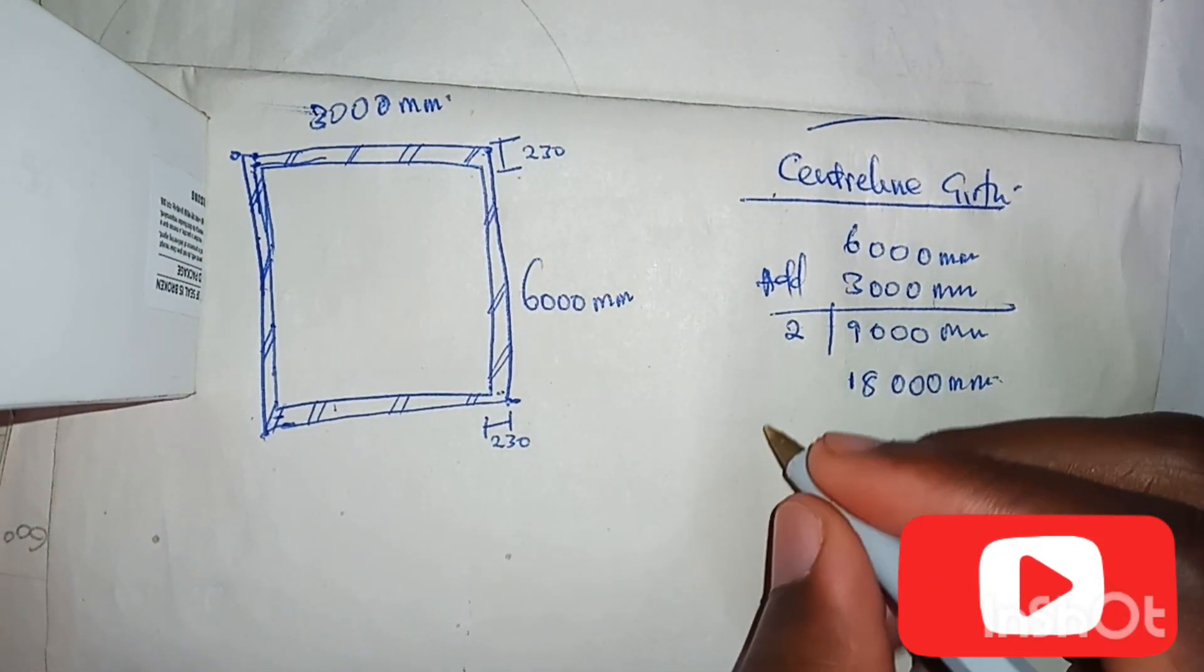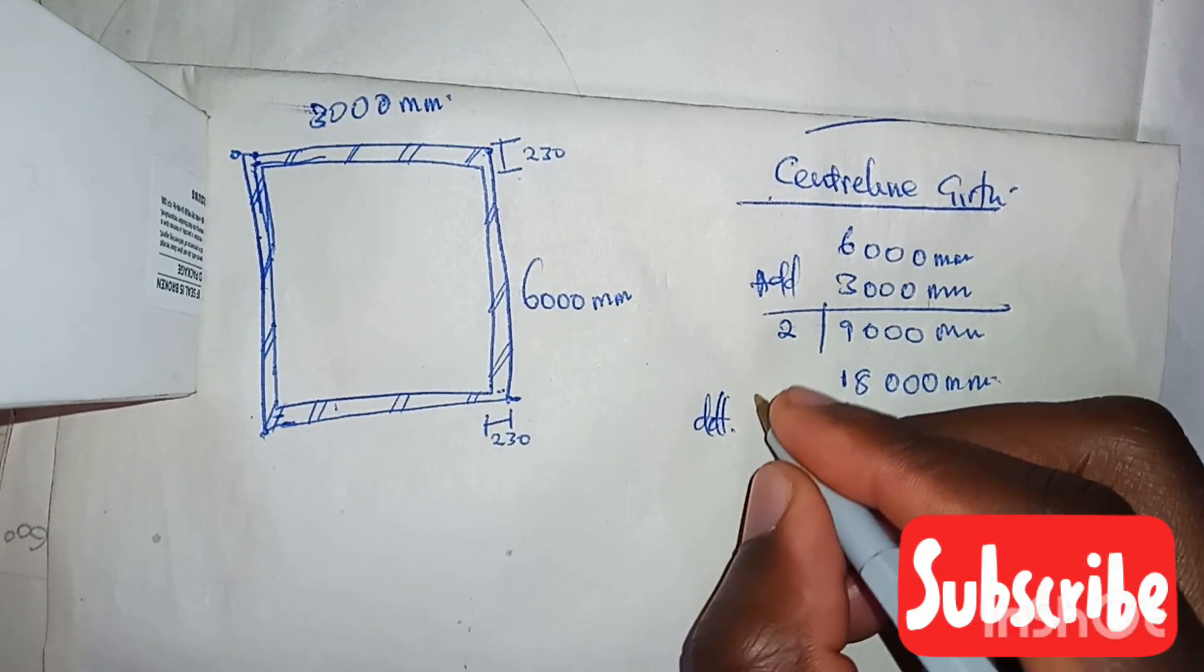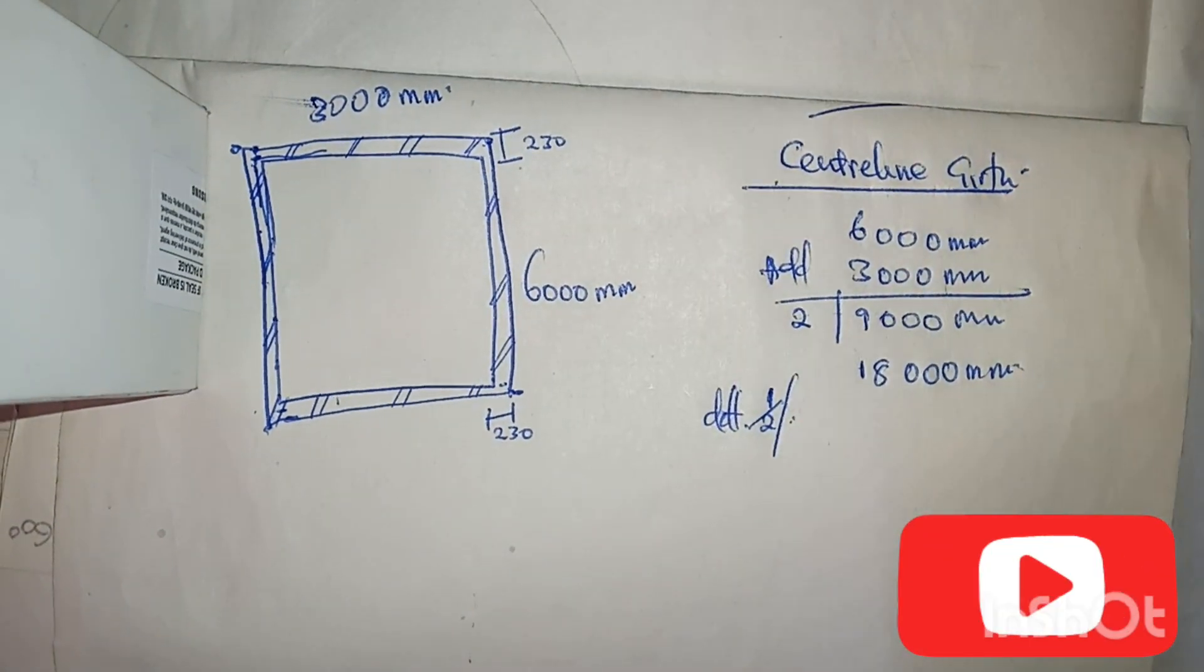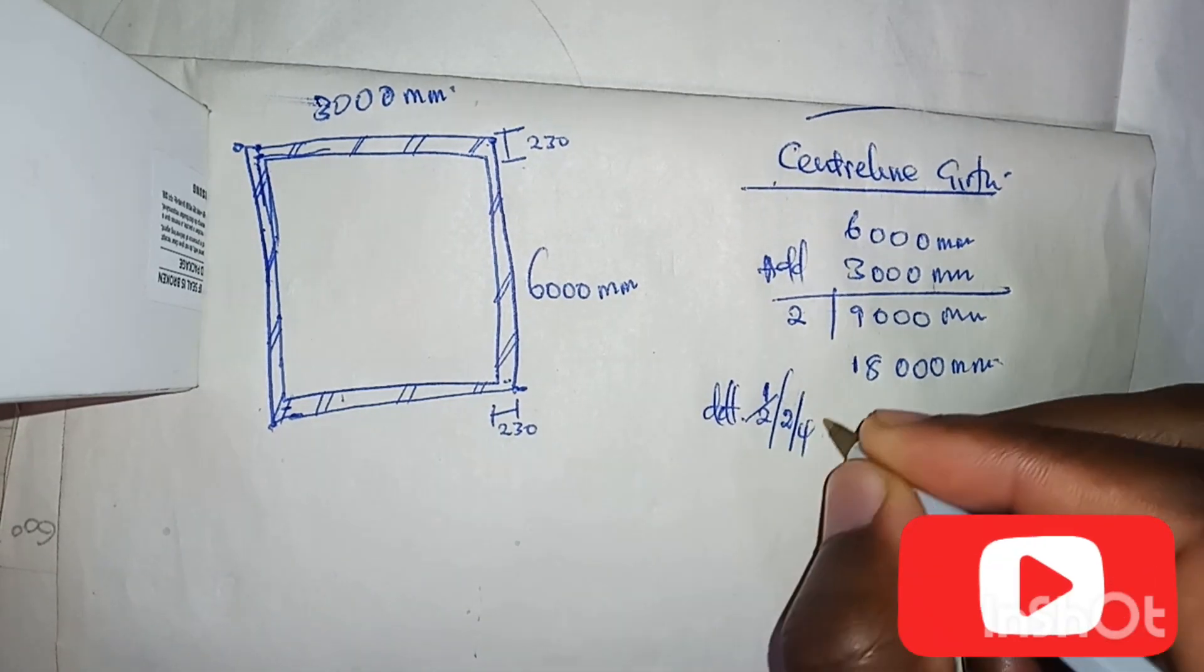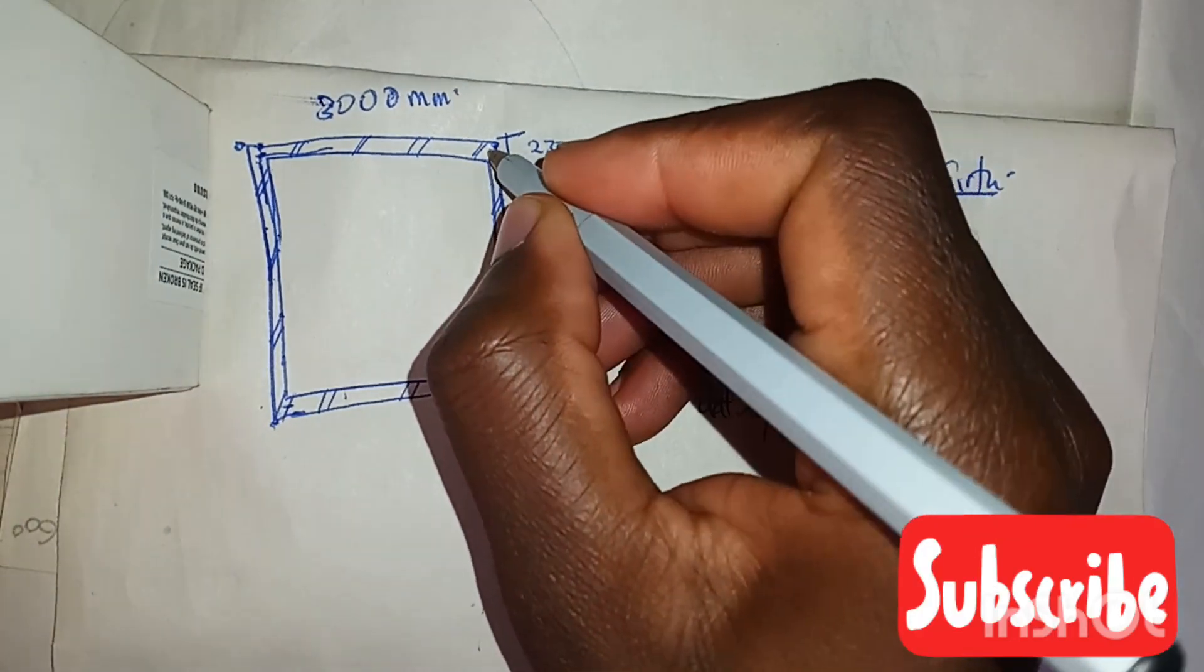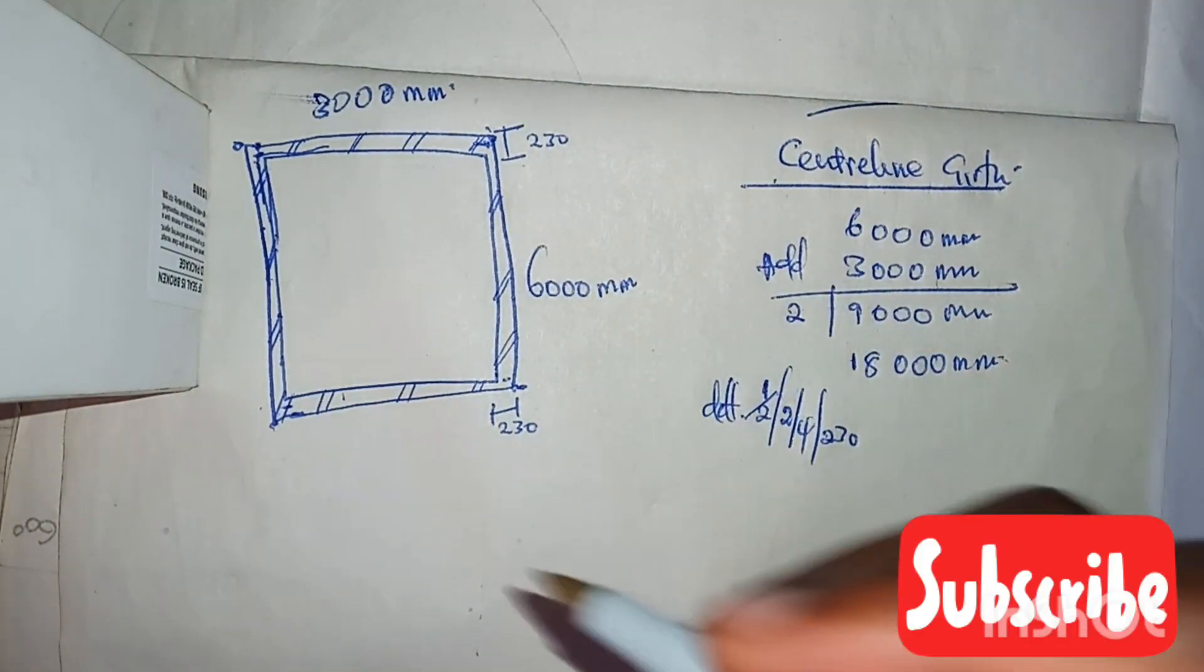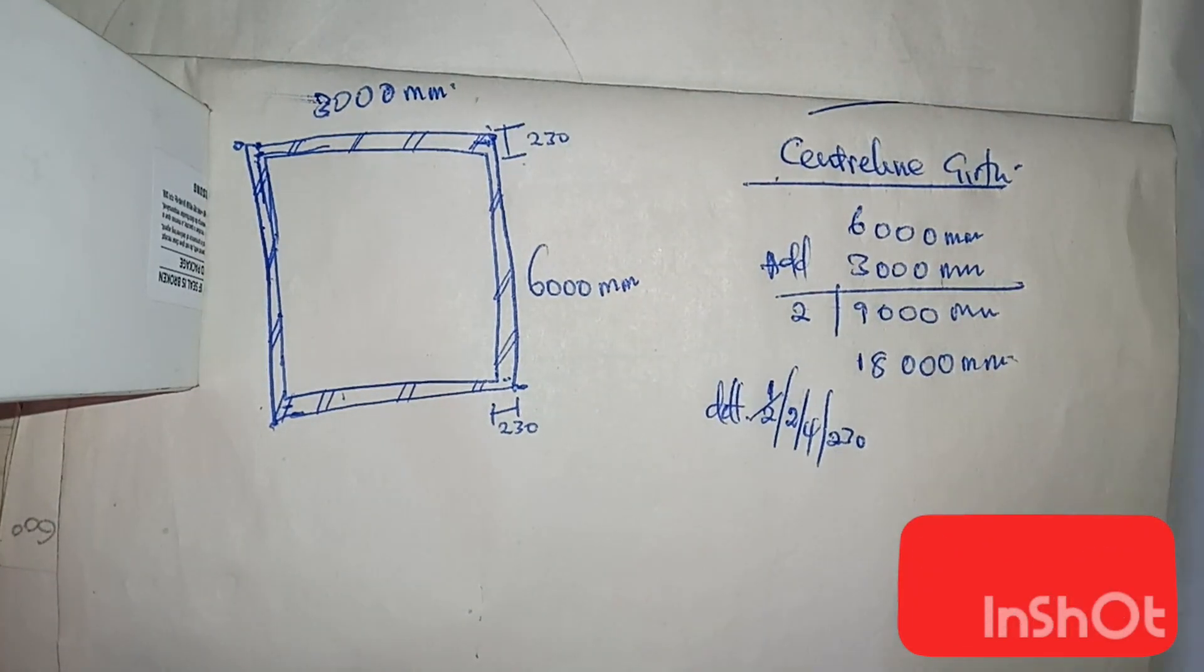So this is how we do it. We say deduct half by 2 by 4 by 230. Half is for this part of the wall since we say our center line should be at the middle. So it's half by 2 then by 230. Our wall is 230.